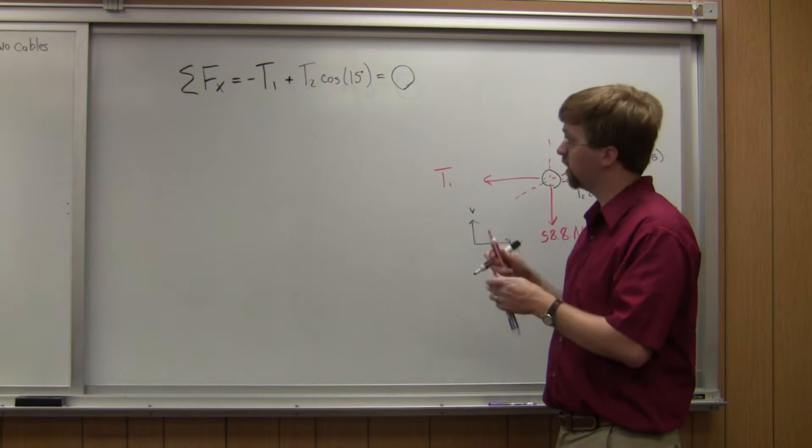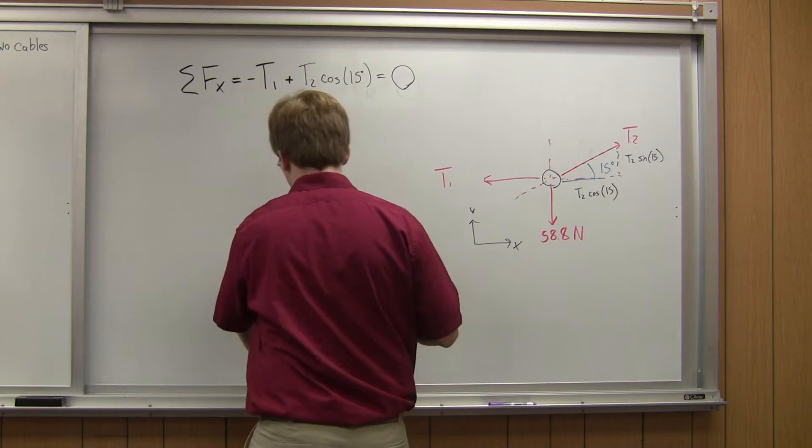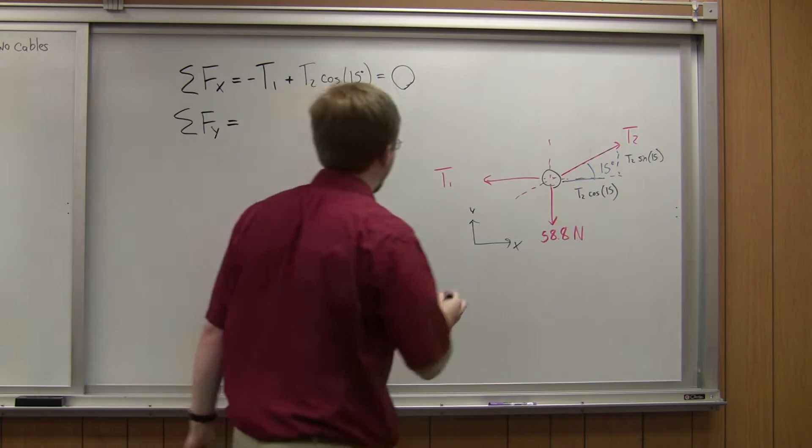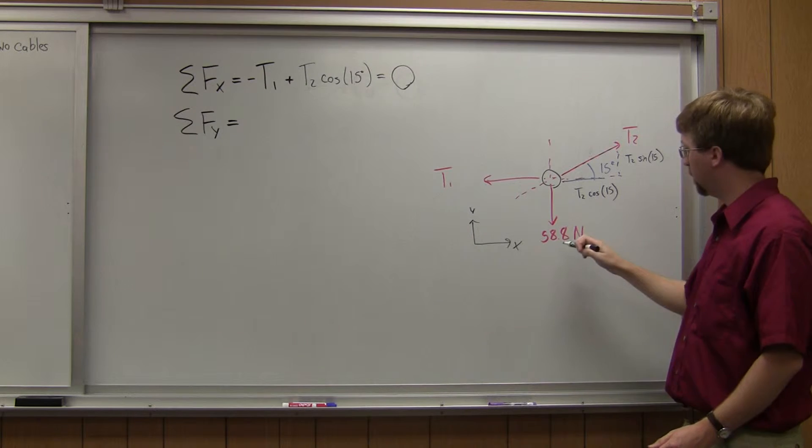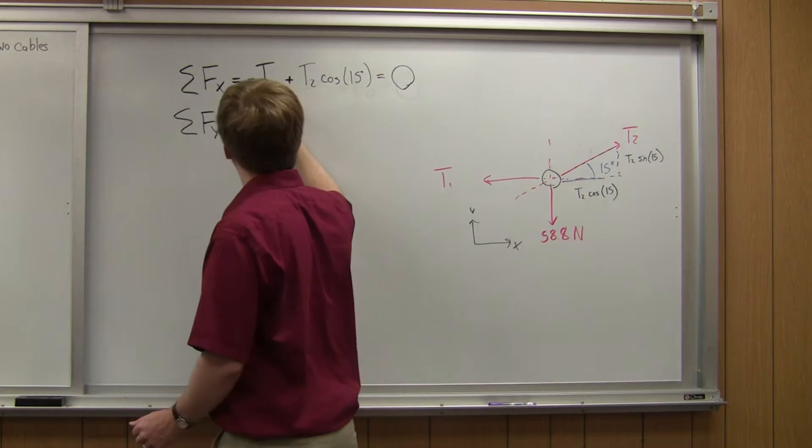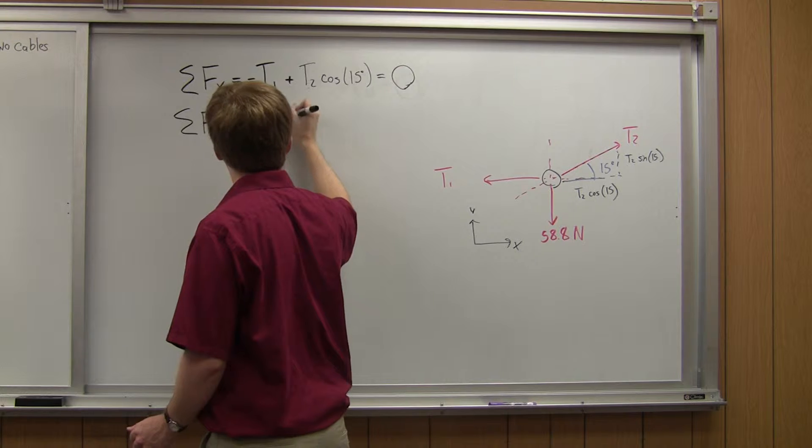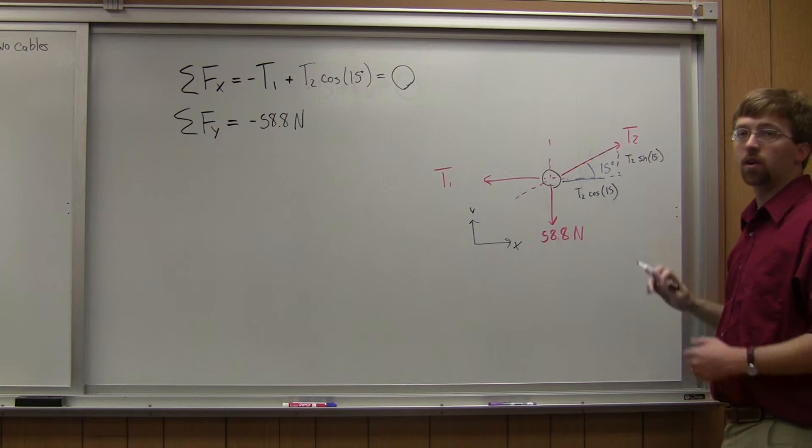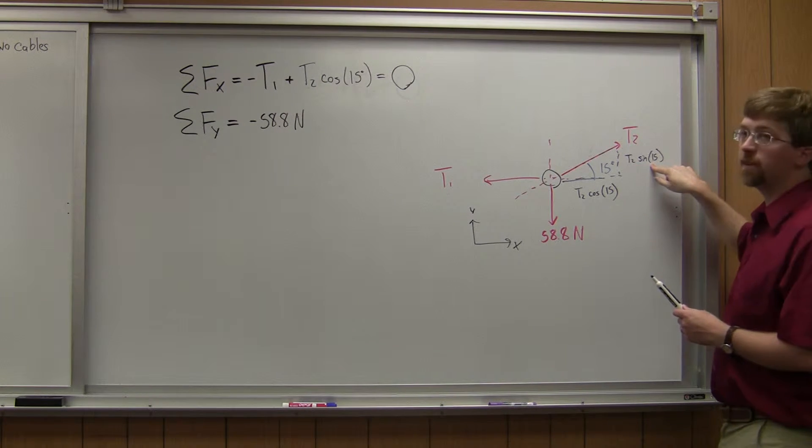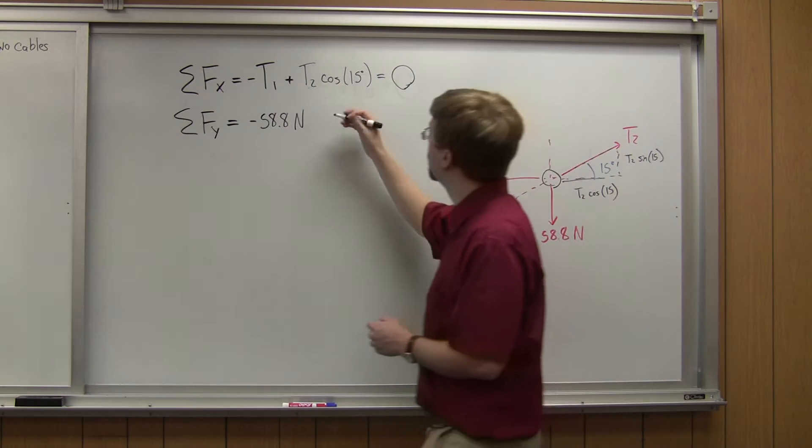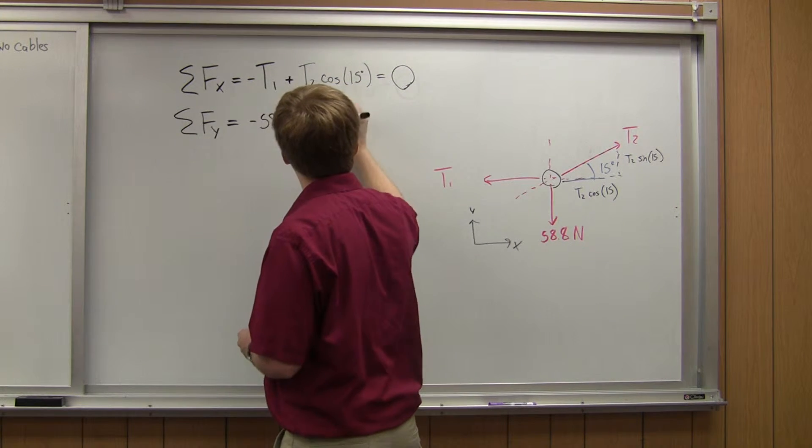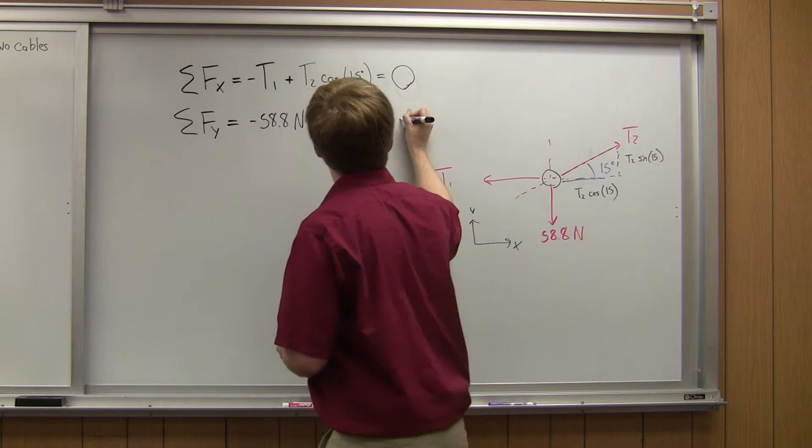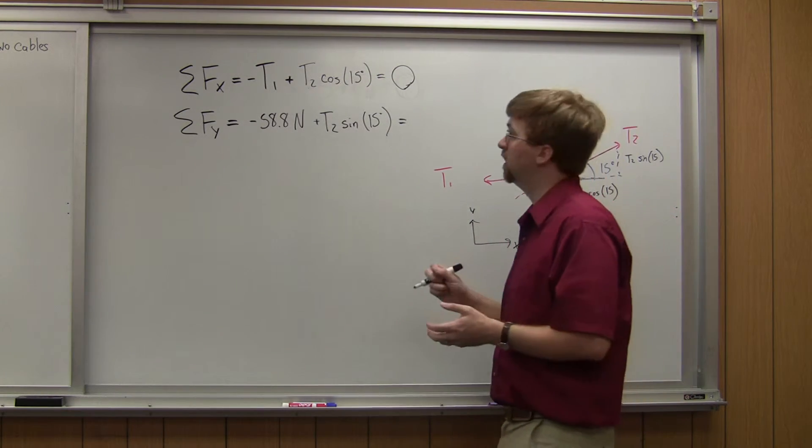Next equation is going to be sum of forces in the y. So in the y direction, T1, there's no vertical component to that. I've got this negative 58.8. And I've got this positive component here. So it's this T2 sine 15, or the vertical component of T2. And this whole thing is going to be equal to zero, because this is in equilibrium.